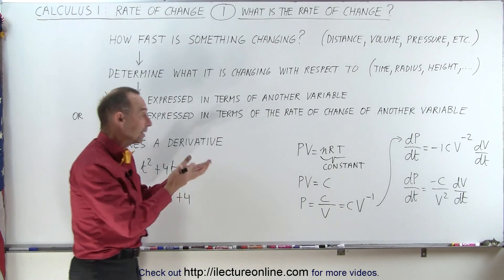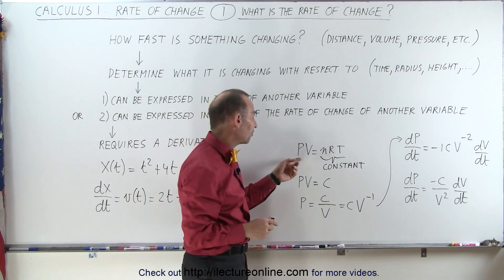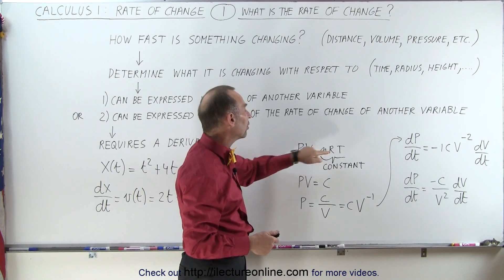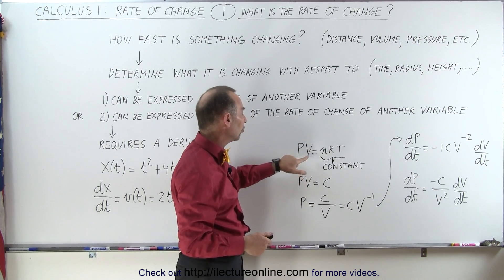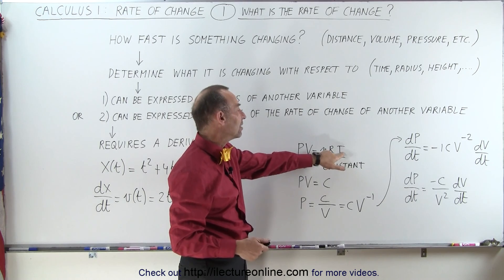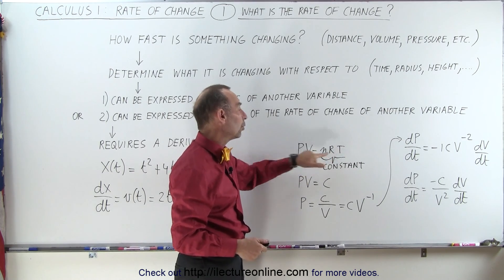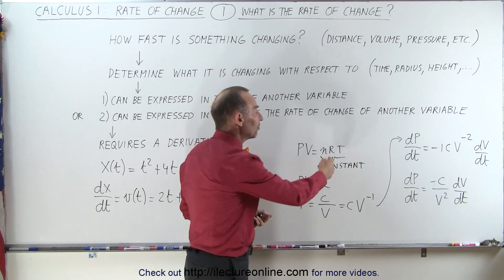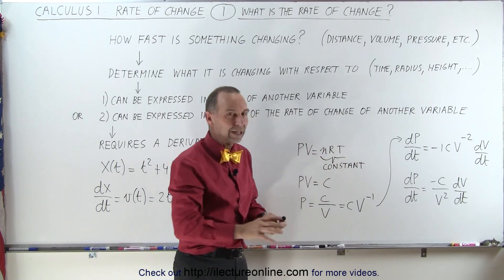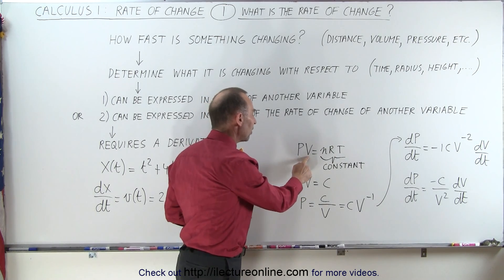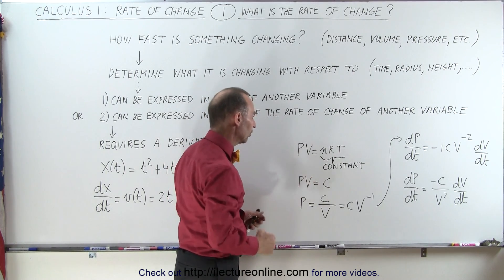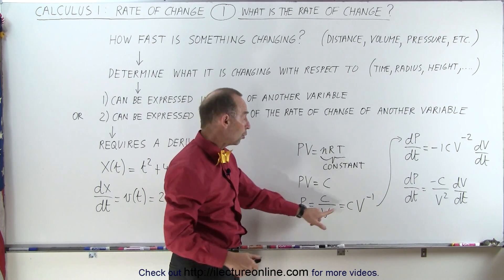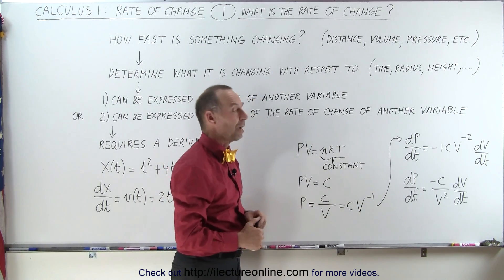Or we can look at another example, where we have the ideal gas equation, PV equals nRT, where P is the pressure, V is the volume, T is the temperature, n is the number of moles, and R is the gas constant. Let's say for a moment that the temperature is constant — we call that Boyle's Law. That means that pressure times volume is equal to a constant, or the pressure can be written as a constant divided by the volume, or the constant times V to the minus 1 power.